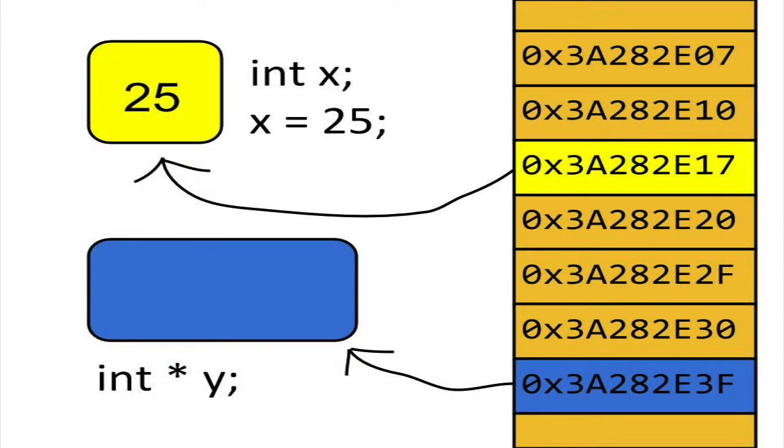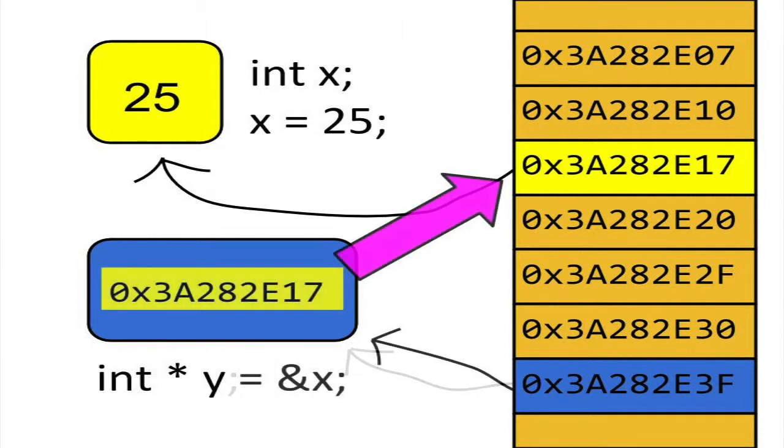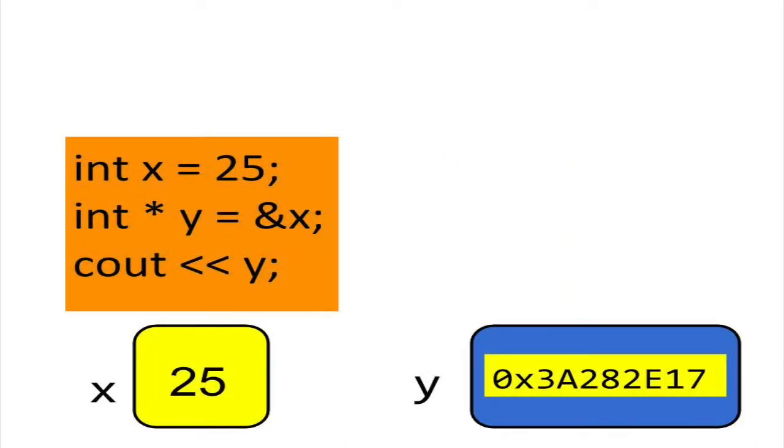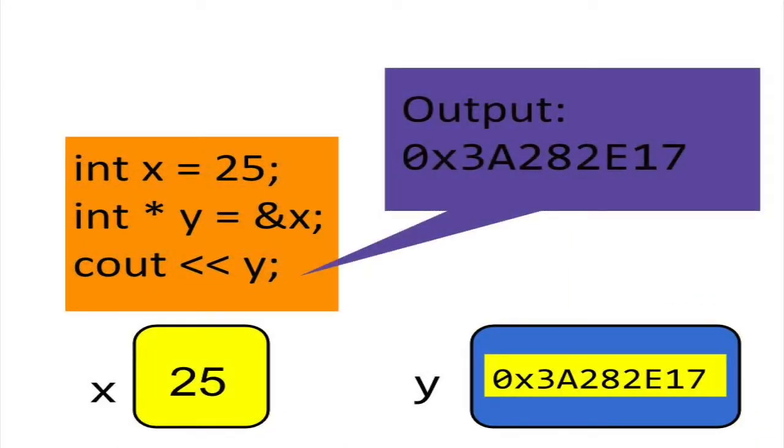Now we can use y to access int variables indirectly. Let's assign the pointer y to the int variable x. The ampersand symbol, or reference operator, gives us the address of the variable x. So remember, putting an ampersand symbol in front of a variable returns the memory address of that variable. So if you output the contents of y, you will get the address of x.